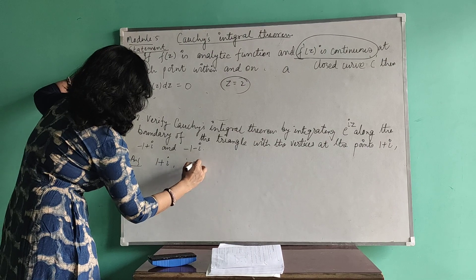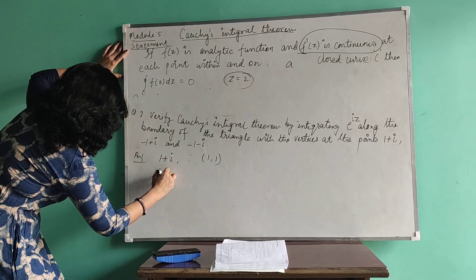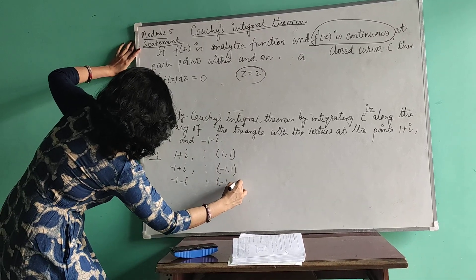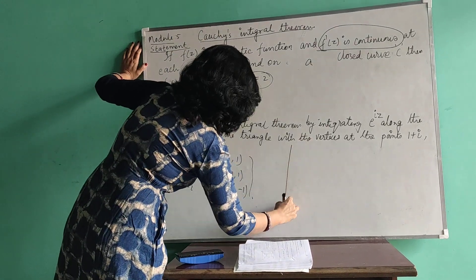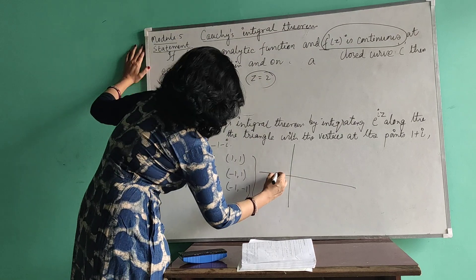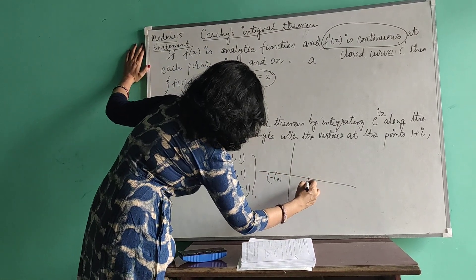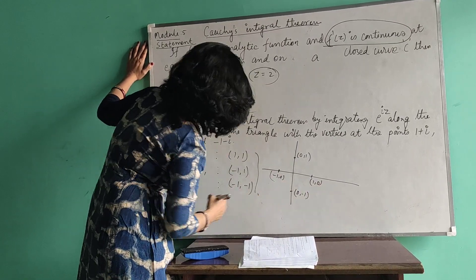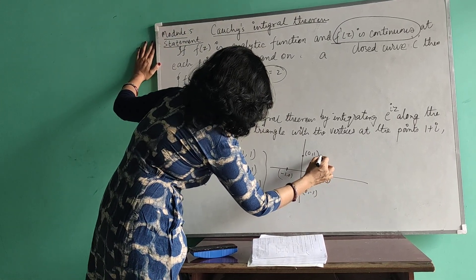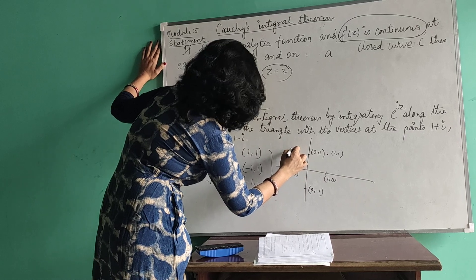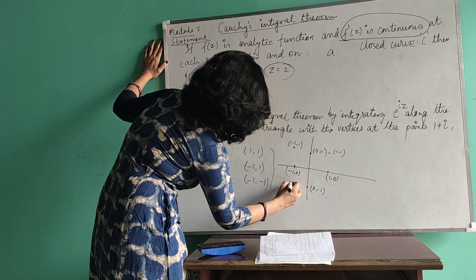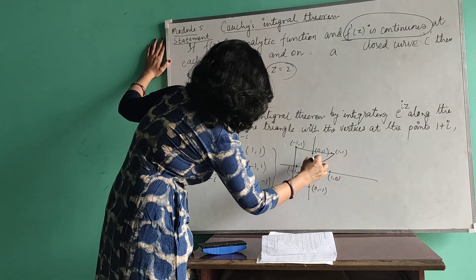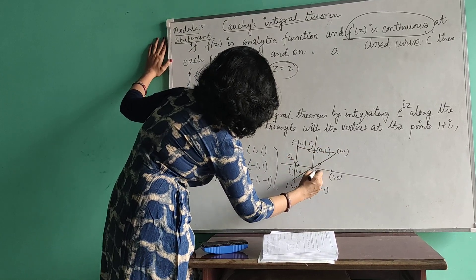The vertices in coordinate form are: 1+i corresponds to (1,1), -1+i corresponds to (-1,1), and -1-i corresponds to (-1,-1). Drawing the figure: the point (1,1) is A, (-1,1) is B, and (-1,-1) is C. The three sides of the triangle are labeled C1, C2, and C3.